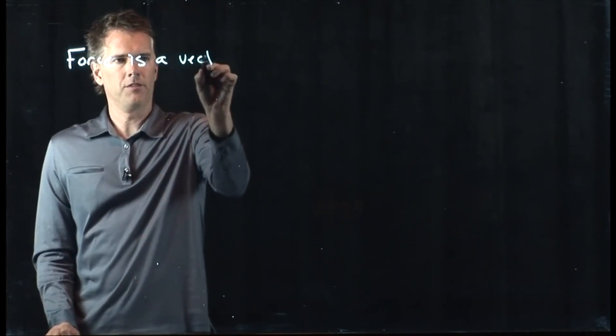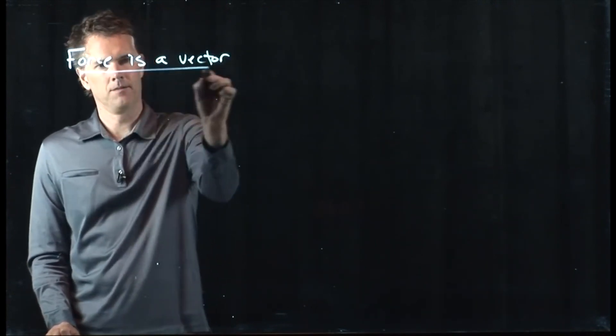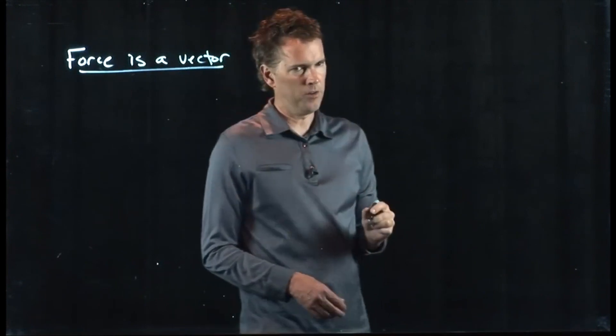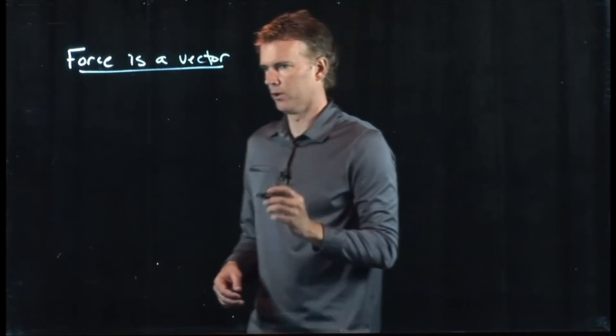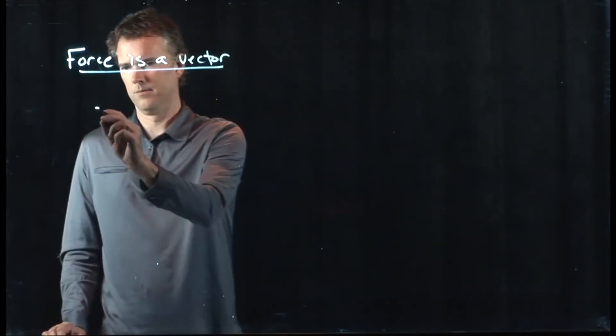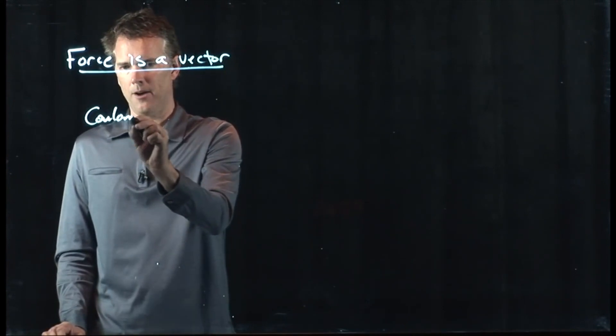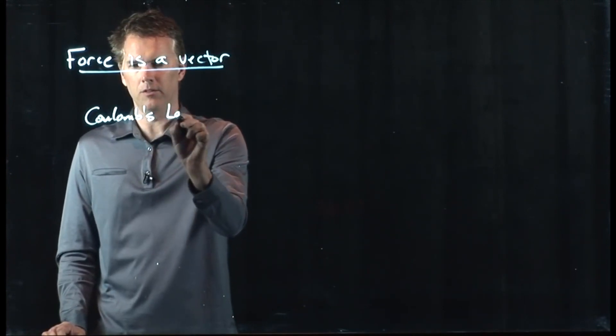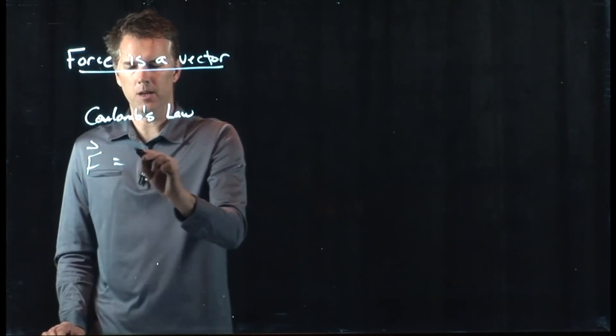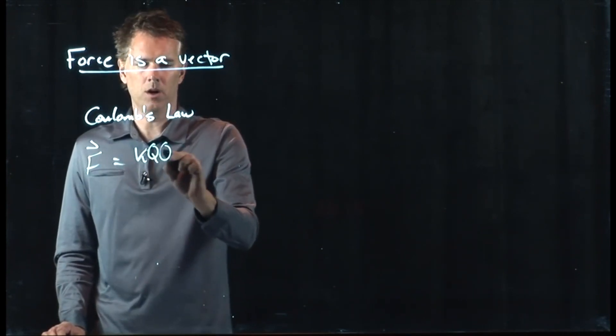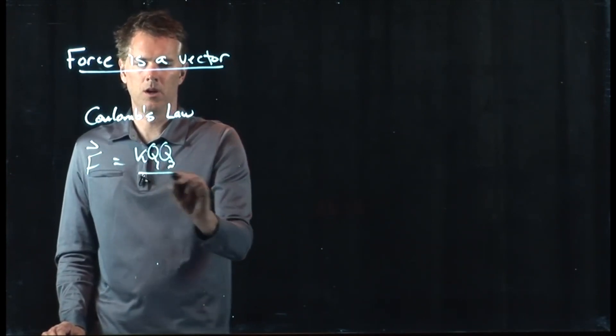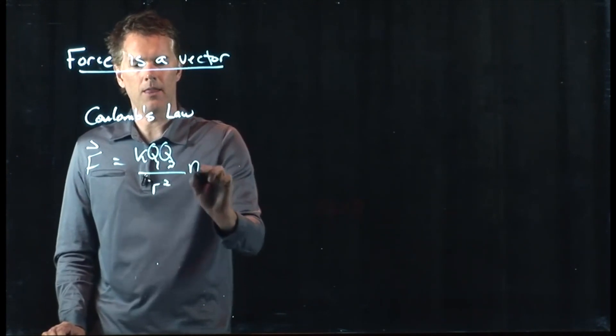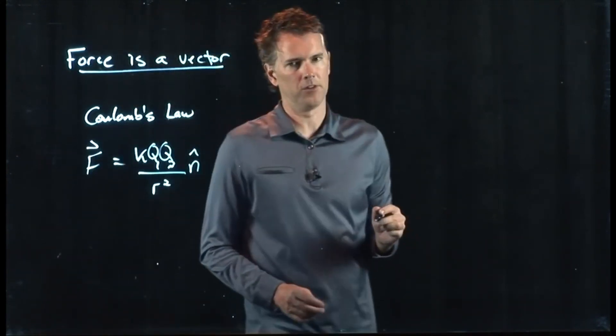This is the idea that force is a vector. Force is a vector and therefore Coulomb's Law, we have to worry about adding those forces as vectors. F equals K Q1 Q2 all over R squared and then there is this direction associated with it.